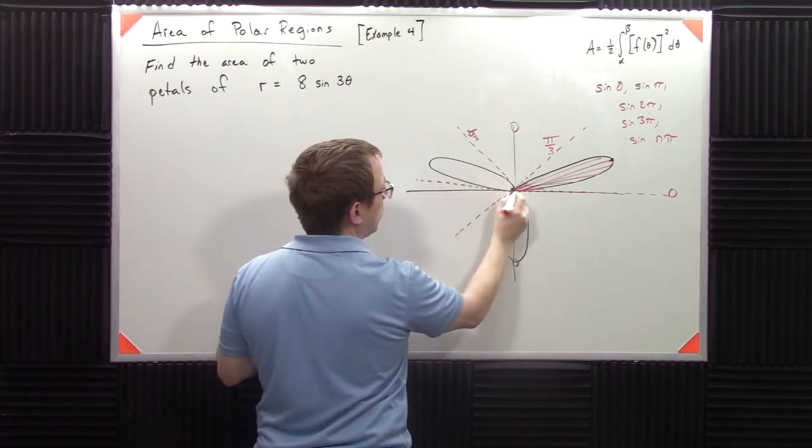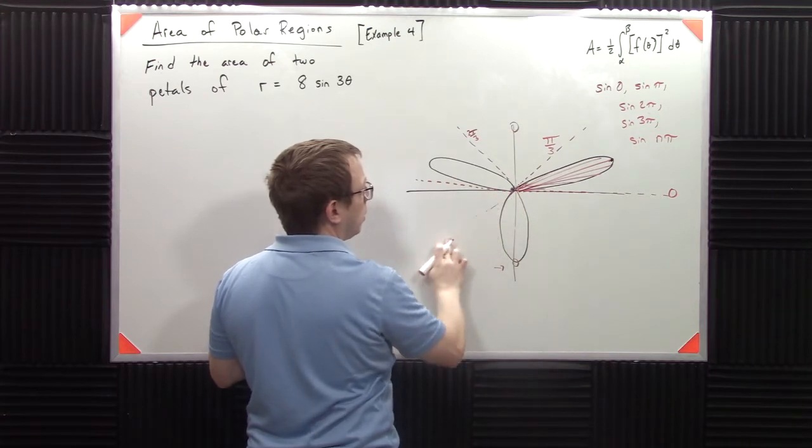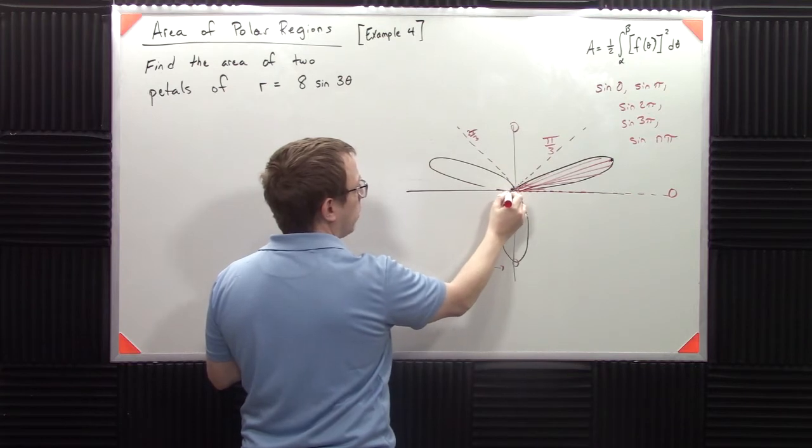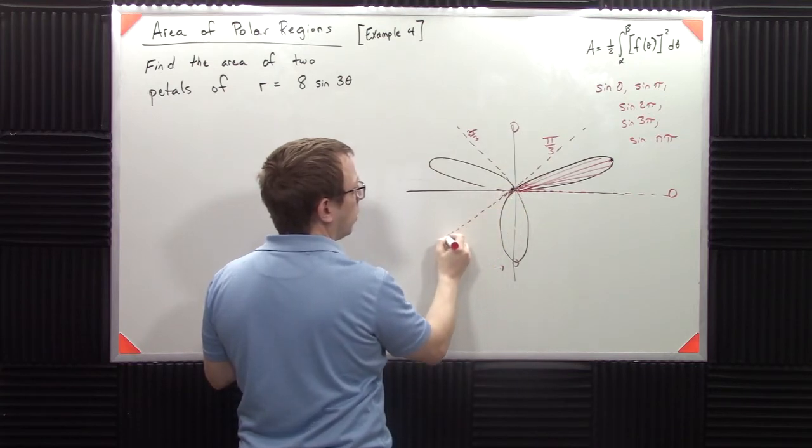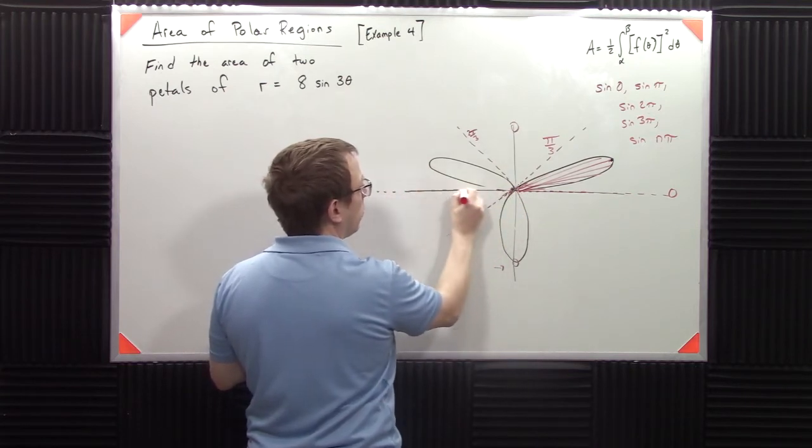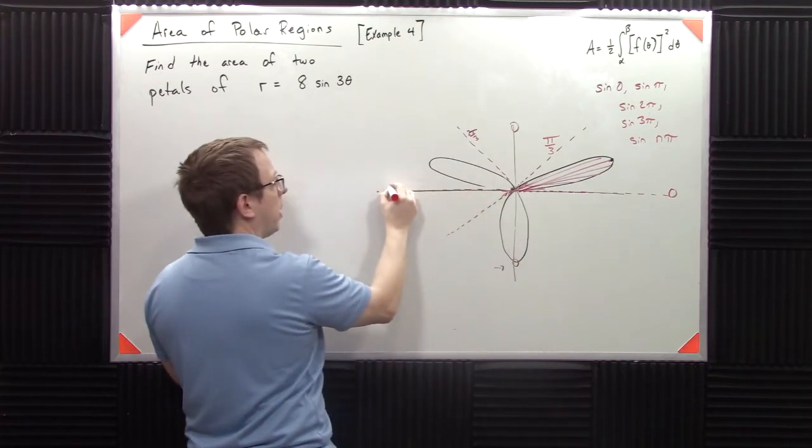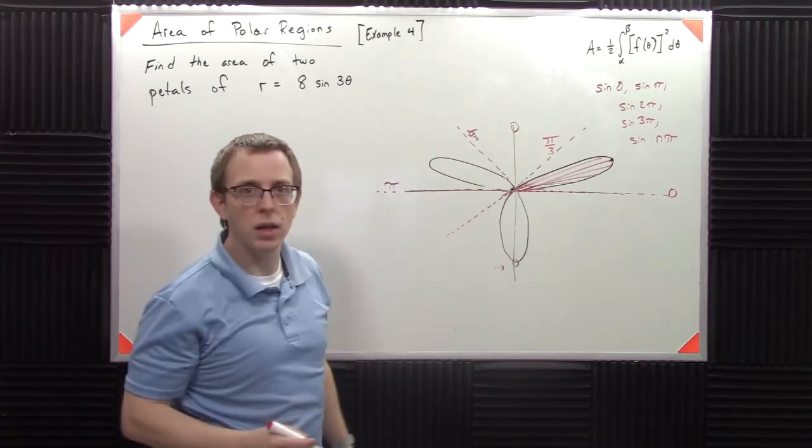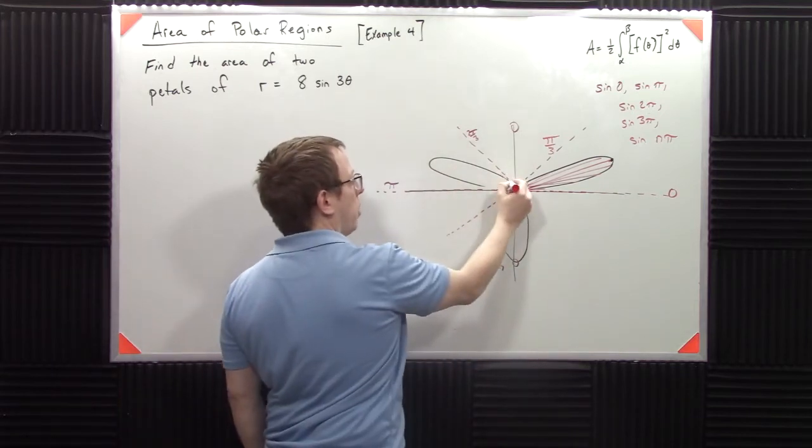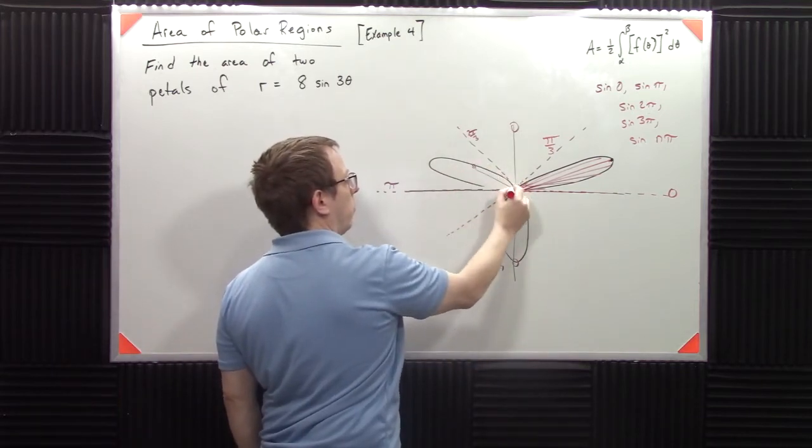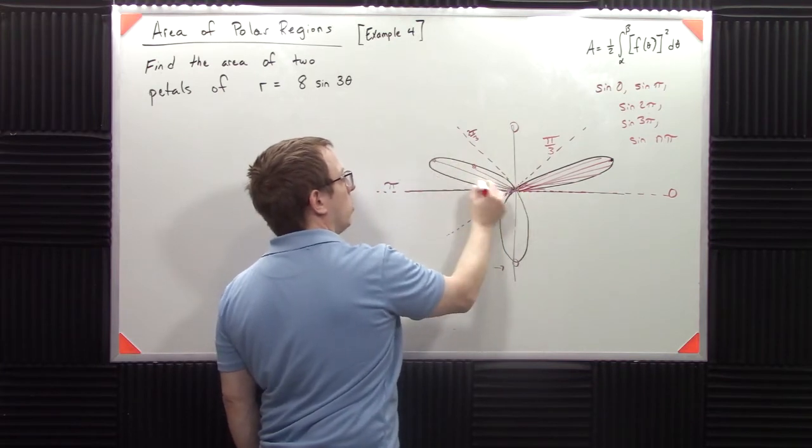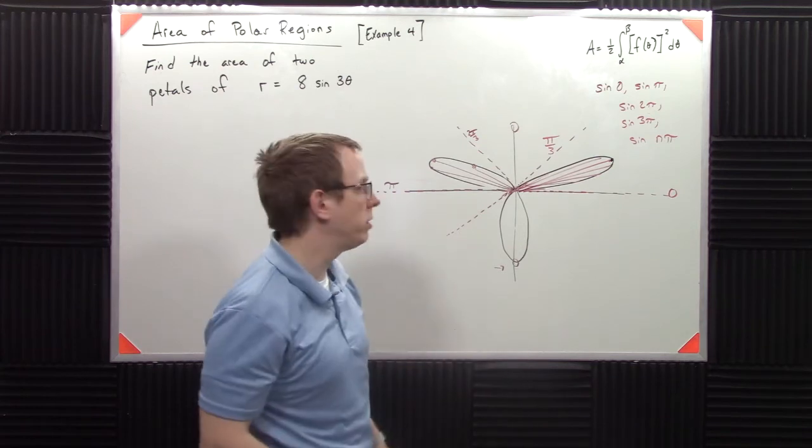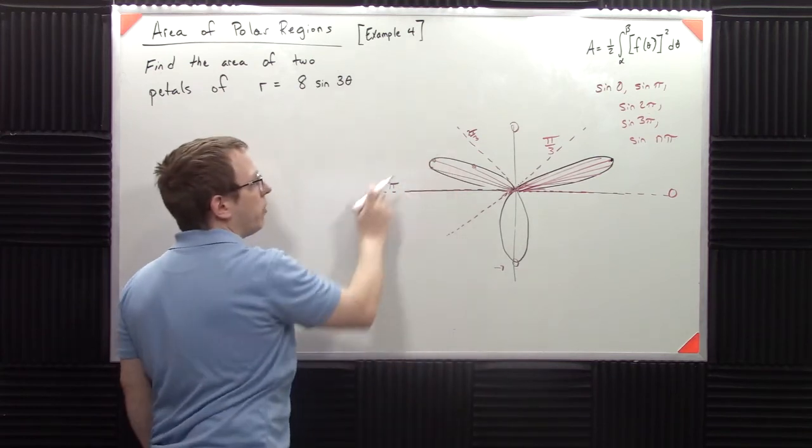So after pi over three, our next piece is actually here. That's pi right there, because that would be sine of three pi. So two pi over three to pi, we're in the positive direction because we're coming out. If you go along the line of the angle and you hit the graph, then you know that you're going in the positive direction. So between two pi over three and pi.